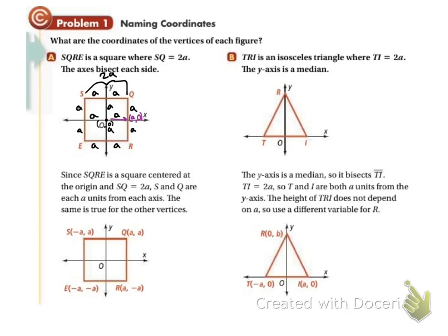And then if I move up from there to this vertex — the corner — moving up means our y is going to change. Our x will still be a, and we're moving up a, so our y coordinate is also a, giving us (a, a). If we go back to that point and move down to the lower vertex, moving down changes y again. Our x is still a, and we moved down a, so this y coordinate is negative a, giving (a, −a).